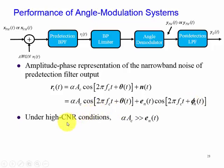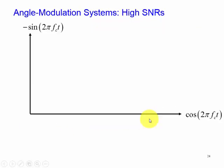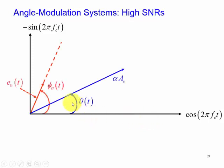Again, this is for the high carrier-to-noise ratio case with alpha_ac and e_n(t). Here's our noise: notice it has an amplitude of e_n(t) and a phase of phi_n(t).